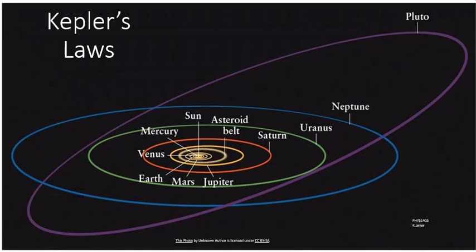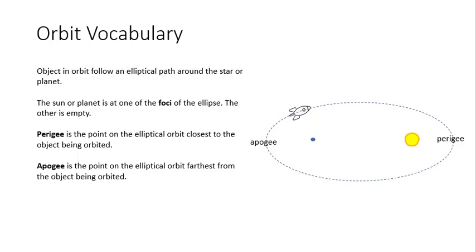Here's some vocabulary about orbits. The orbit is an elliptical path that an object follows when traveling around a star or planet. It could be a moon, satellite, rocket, or any object traveling around. The path is elliptical.